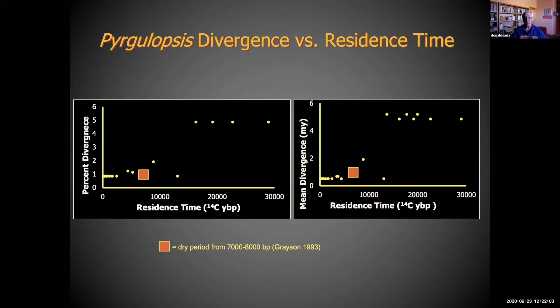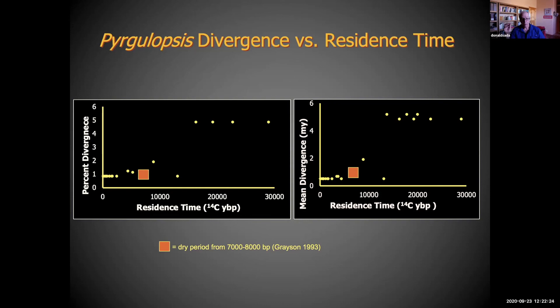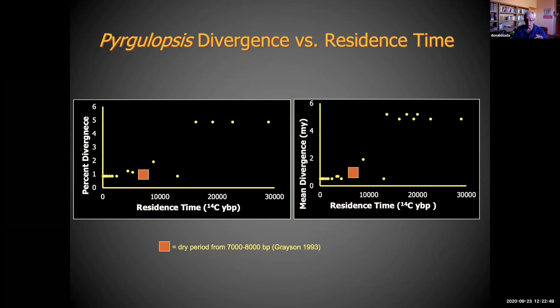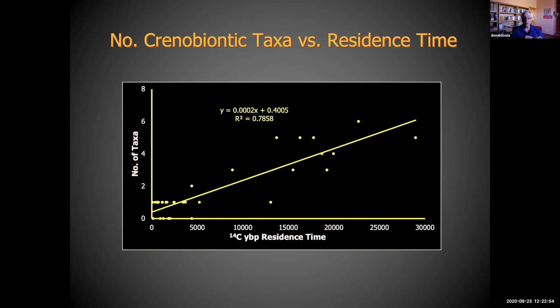Now it gets really interesting — looking at Pyrgulopsis divergence times and residence times of water. Looking at divergence per million years, the rate is about 1.6% per million years. As you get older residence time, you have more species. Old species have been divergent from ancient things for a long time. Under shorter residence times, you have younger species, or species that have not been there that long. Looking at residence time versus number of crenobiontic taxa in the spring — this is really impressive — the older the water, the more species you have in the spring.